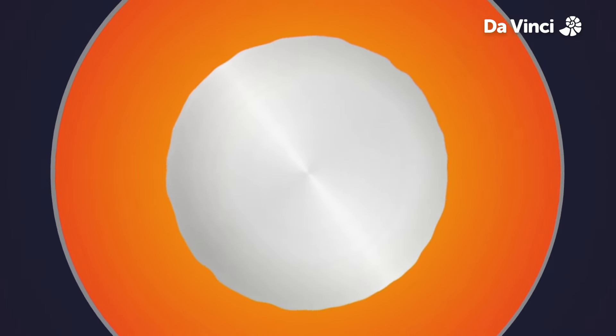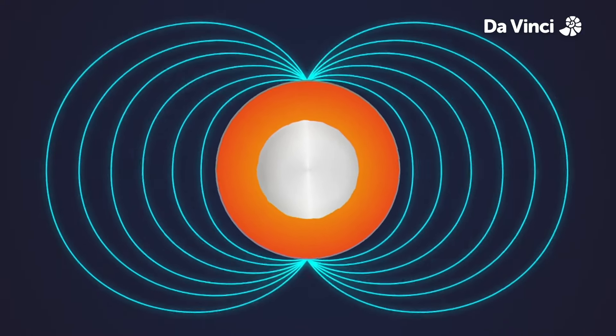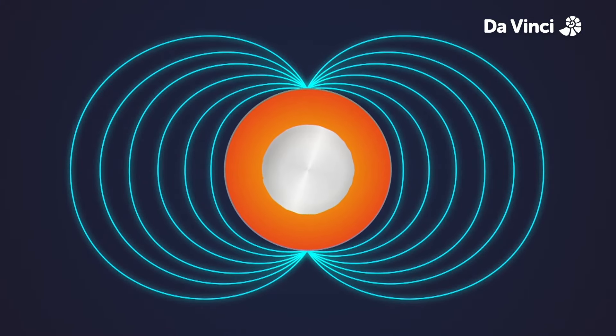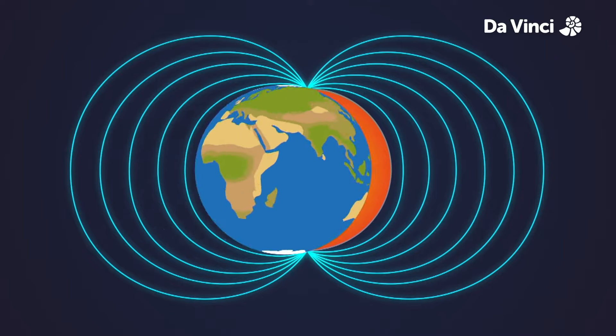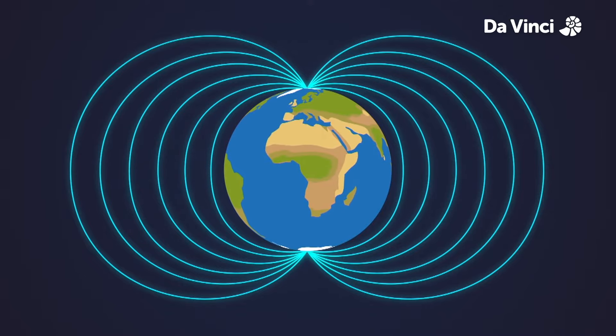And wherever electric current is flowing, there also is an invisible magnetic field. The geomagnetic field covers the whole Earth and goes a few thousand kilometers into space.